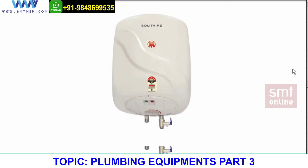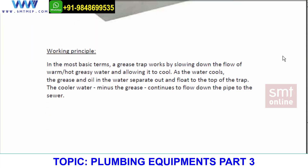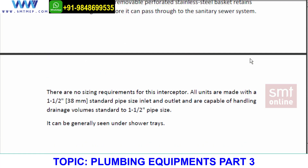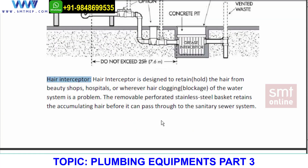The next equipment is a hair interceptor. By the name itself you can identify what it is. A hair interceptor is a kind of interceptor which is generally seen in the shower area or shower drains, or in a laboratory tray. When someone has taken a bath — especially ladies who have longer hair — you'll see there are hairs on the floor drain.